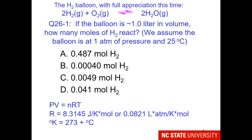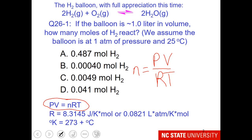Now that you have seen the video, if the balloon is approximately 1 liter in volume, how many moles of hydrogen react? We are going to assume the balloon is at 1 atmosphere of pressure and a temperature of 25 degrees Celsius. I am sure you realize you need to use PV=nRT. Your job is to substitute your variables and make sure you use the correct R and temperature in Kelvin.